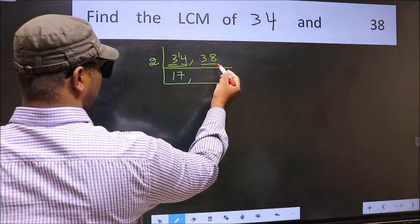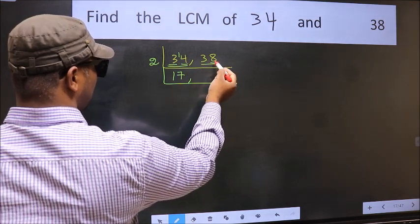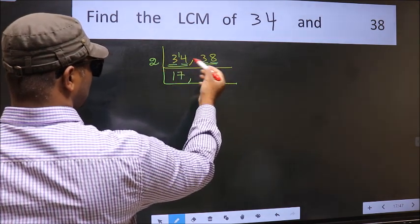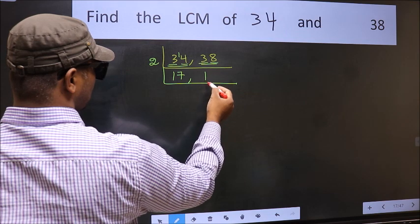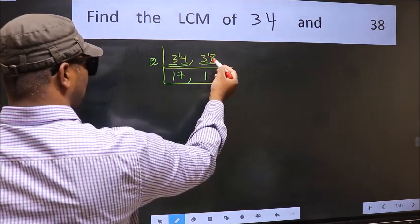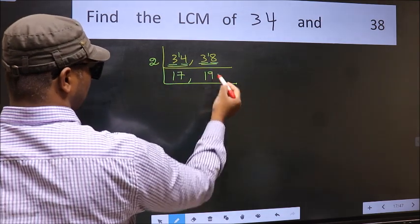The other number 38, last digit 8, even, so this is divisible by 2. First number 3, a number close to 3 in 2 table is 2, 1, 2. 3 minus 2, 1, 1 carried forward 18. When do we get 18 in 2 table? 2 times 9, 18.